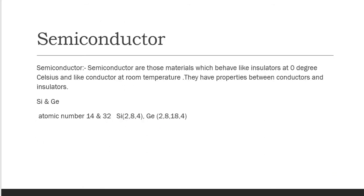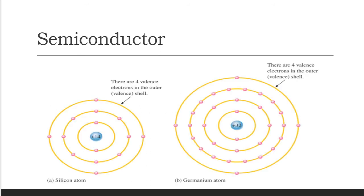What is meant by a semiconductor? A semiconductor is a material that behaves like an insulator at 0 degrees Celsius and can behave like a conductor at room temperature — it possesses both conductor and insulator properties. Silicon and germanium, with atomic numbers 14 and 32 respectively, both act as semiconductors. The electron configuration of silicon is 2, 8, 4.